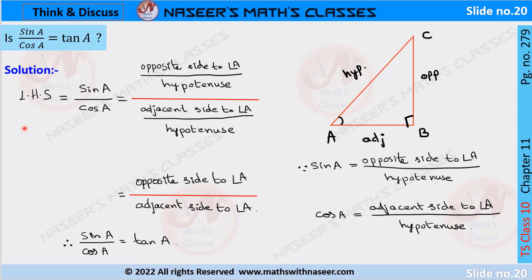Now we take LHS, that is sine A by cos A. We substitute the sine A and cos A values. Then it can be written as: opposite side to angle A by hypotenuse, divided by adjacent side to angle A by hypotenuse. Here we cancel hypotenuse with hypotenuse, then we can write it as opposite side to angle A by adjacent side to angle A. We already know that this is the definition of tan A. Therefore, sine A by cos A is equal to tan A.